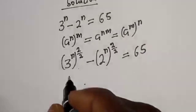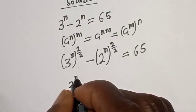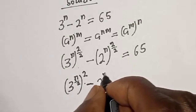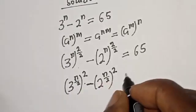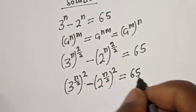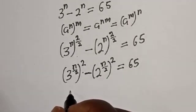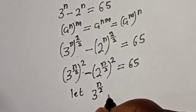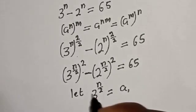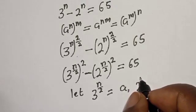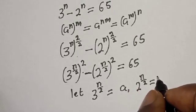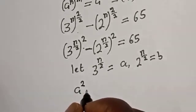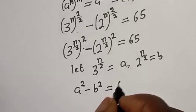From this rule, this becomes 3 raised to power (n over 2) squared minus 2 raised to power (n over 2) squared, equal to 65. Let A equal 3 raised to power (n over 2) and B equal 2 raised to power (n over 2). So we have A squared minus B squared is equal to 65.